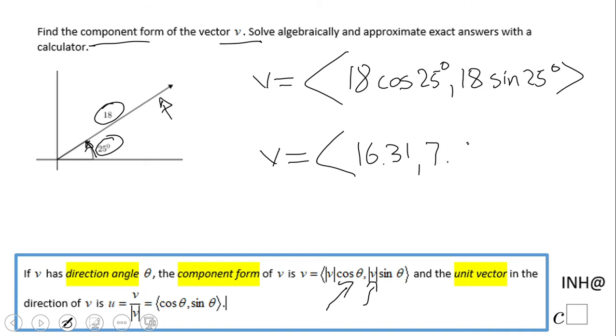This is the component form of this vector you see here. If you enjoyed this, there is opportunity to click the like button and come back and see C squared for more help.